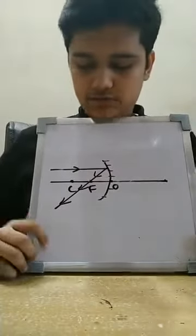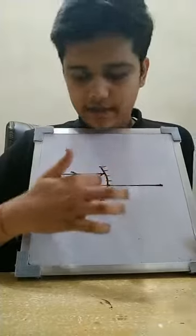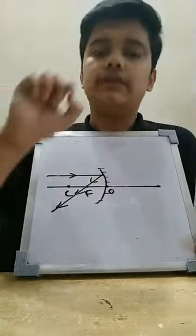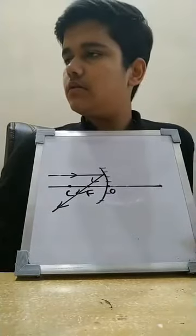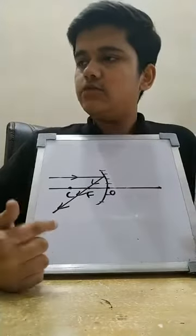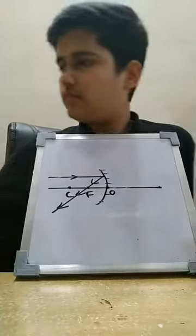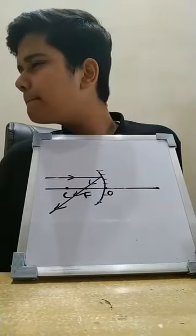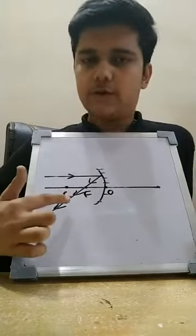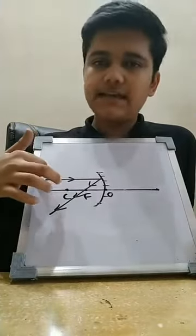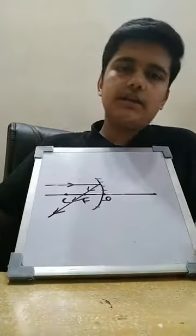As you can see, the line was parallel to the principal axis. Now, after reflection, it passes directly through the focus. That means if a line is parallel to the principal axis, then after reflection it passes through the focus and goes in another direction.